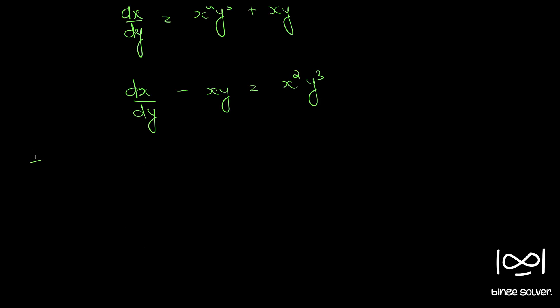Dividing throughout by x square, we get x raise to minus 2 dx by dy minus x raise to minus 1 y equal to y cube.